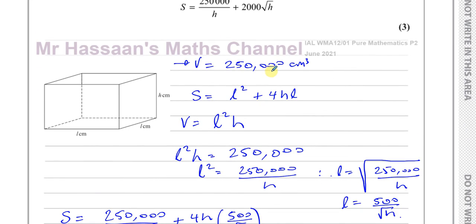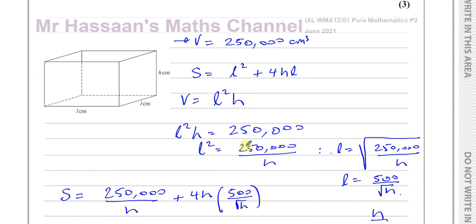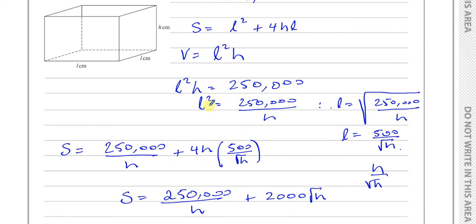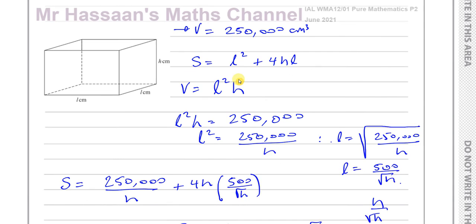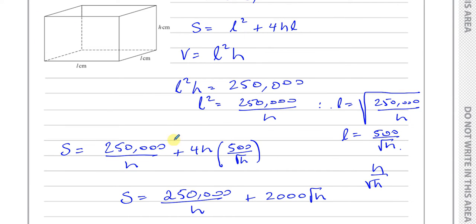A lot of students get intimidated by such questions, but there's no need. They always give you information about two aspects of an object — here the volume and the surface area. Find the surface area in terms of the given letters, then use the volume to eliminate the letter not present in the final answer. Here that's L — make L or L squared the subject and substitute it in.